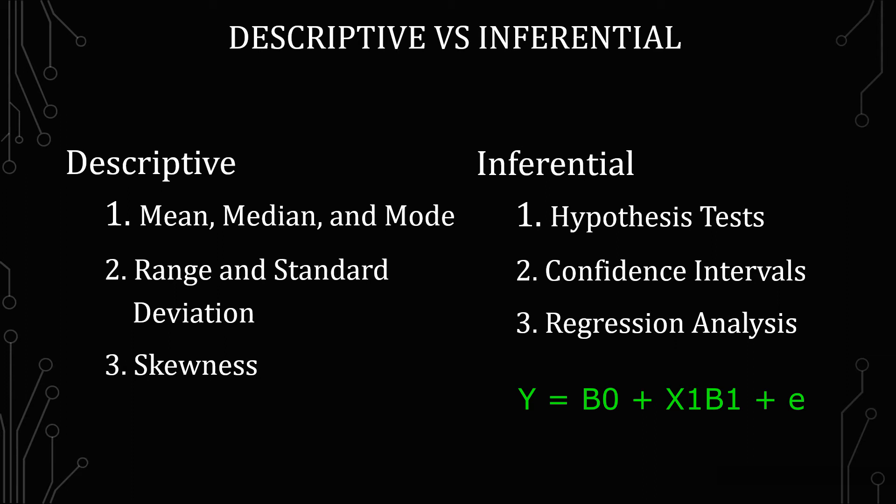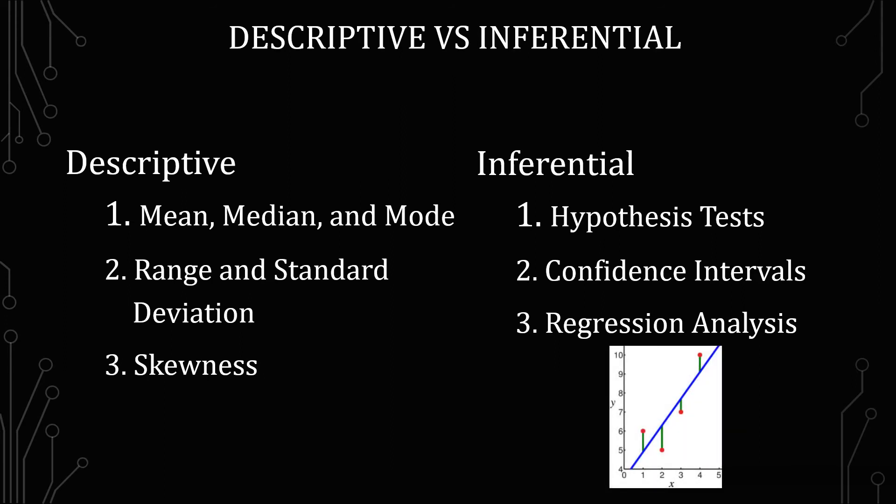And it does take into account both hypothesis testing and confidence intervals. The difference is that it's showing you a pattern in a way that the other two can't. And it shows you correlation as well as other things. But what it's doing is it's trying to show whether or not there is a relationship between the dependent variables and the independent variables.